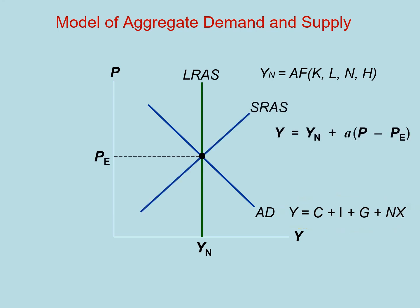Lastly, we have the short-run aggregate supply. It shows the relationship between firms' behavior and short-run output. As prices increase, firms increase their output in the short-run. One important idea is that of expectations. In the model, expectations about the price level, PE, will change a firm's behavior and move the economy in the short-run. Together, aggregate demand and short-run aggregate supply determine the short-run equilibrium in the economy.